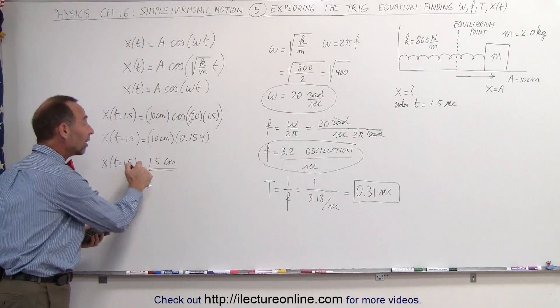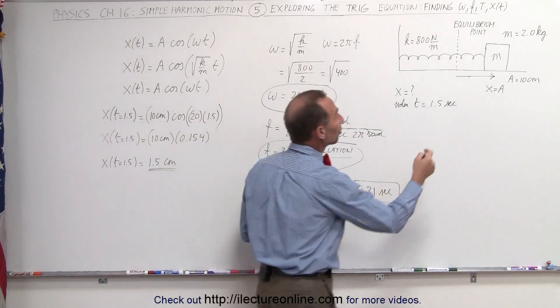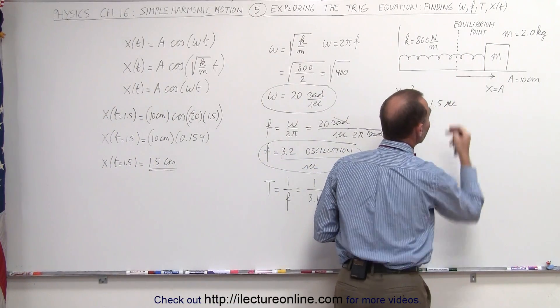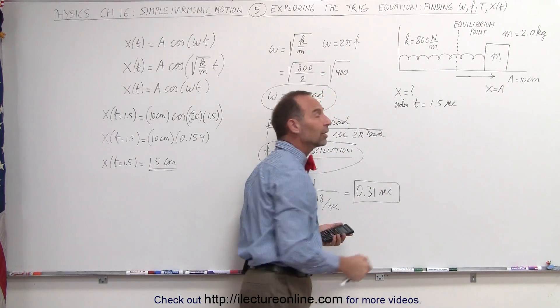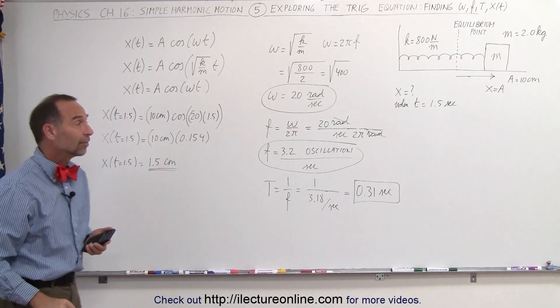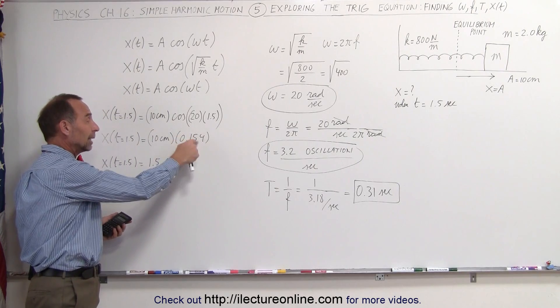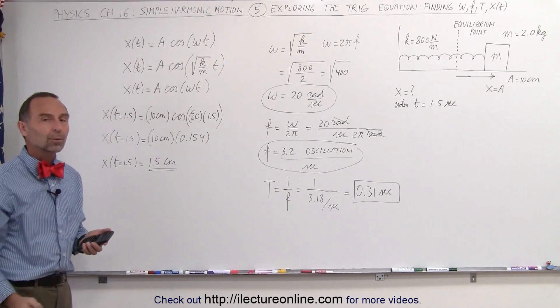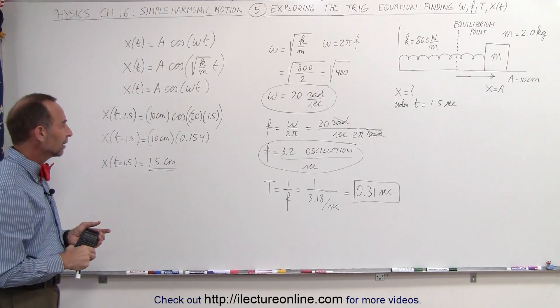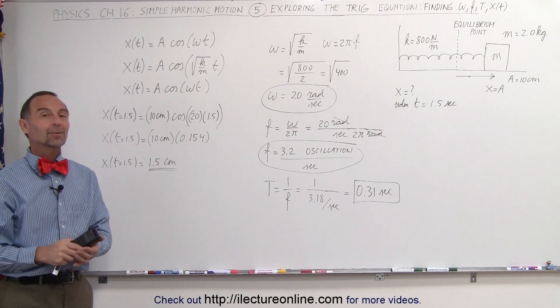The fact that this came out to be positive means that the block was 1.5 centimeters to the right of the equilibrium point at time equals 1.5 seconds. If it had been a negative number, which it could have been, that means that the block would have been on the left side of the equilibrium point. And that's how it's done.